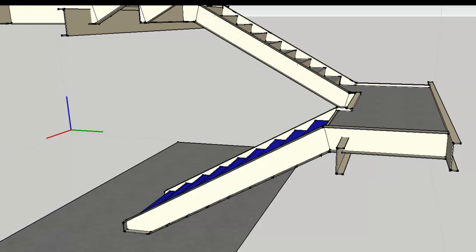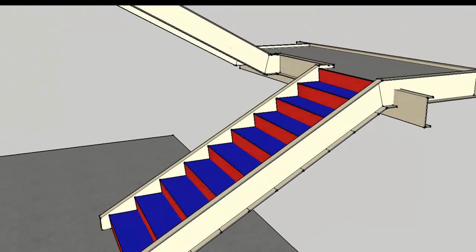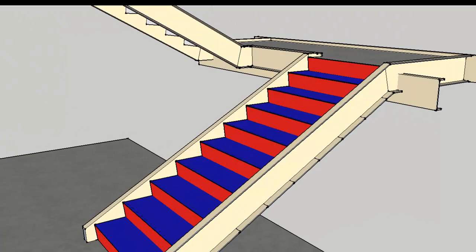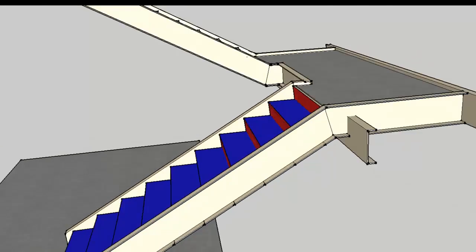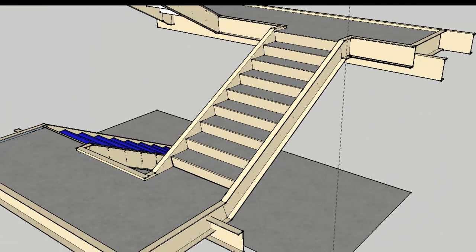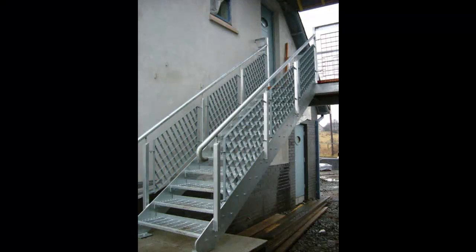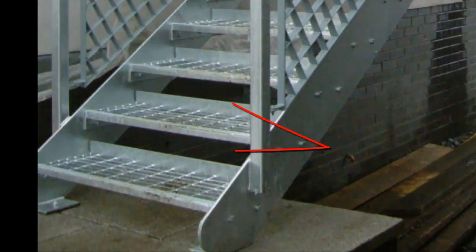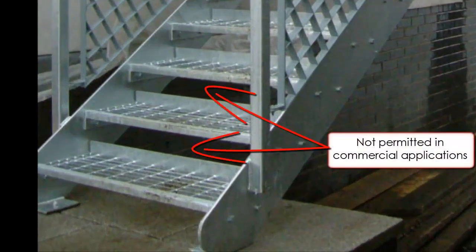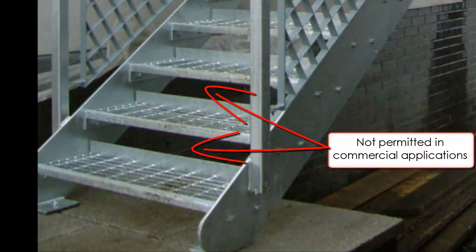Within that run of stairs, all the treads and risers have to be uniform in height and depth. Once you transition to a next flight of stairs, those heights and depths can change, but they do have to be uniform. Additionally, the risers are not permitted to be open. This is to prevent any potential foot slipping past the tread and causing a fall.